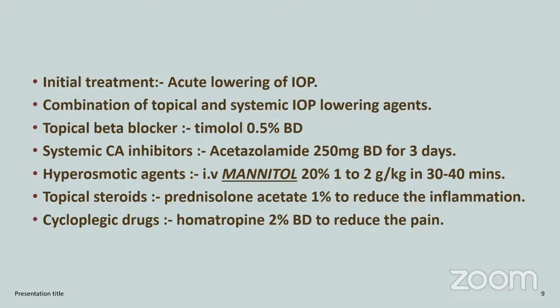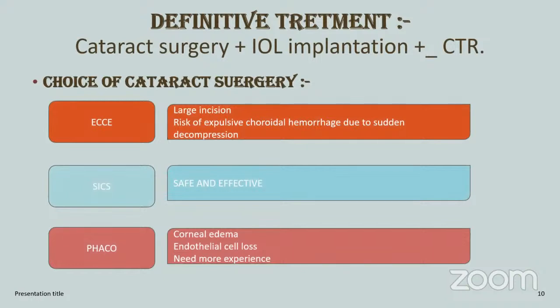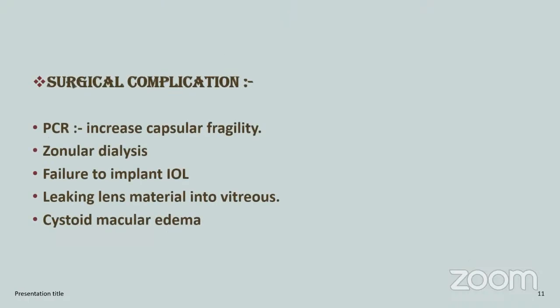Topical steroid prednisolone 1% to reduce inflammation, and homatropine cycloplegic 2% BD for pain relief. The definitive treatment is cataract surgery plus IOL implantation, with or without on-table CTR implantation. ECCE is not very common due to risk of expulsive choroidal hemorrhage; SICS is safe and effective. FACO requires a more experienced surgeon, as more handling of the corneal endothelium leads to corneal edema and loss of endothelial cell count. Surgical complications, though rare, include PCR due to increased capsular fragility.